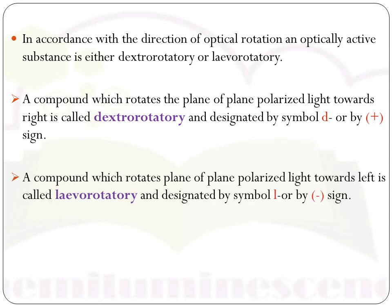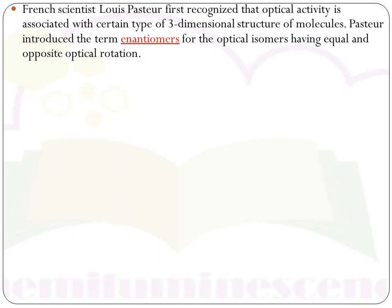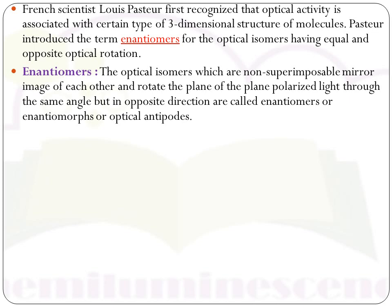Levorotatory compounds rotate plane polarized light to the left and are represented by the symbol l or minus sign. French scientist Louis Pasteur first recognized that optical activity is associated with the three-dimensional structure of the molecule, and introduced the term enantiomers for optical isomers having equal and opposite optical rotation. An enantiomer is an optical isomer which is a non-superimposable mirror image of the other and rotates plane polarized light through the same angle but in the opposite direction.